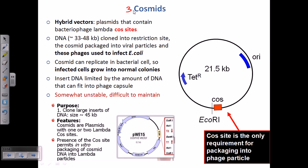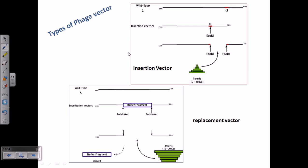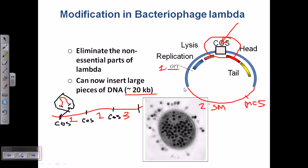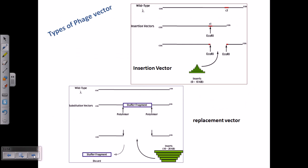Now let's move to the third type of cloning vector, which are called cosmids. Cosmids are modifications — remember, the previous two are natural: plasmid is totally natural, and the lambda phage is natural. But though they are natural, they must be modified. We have seen that in plasmids we need to prepare the multiple cloning site and selectable marker regions, and in the lambda phage vector we need to cleave out junk DNA and add MCS and selectable marker regions. So we must engineer these cloning vectors according to our need.